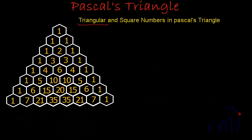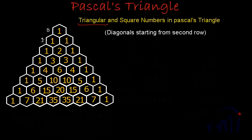Triangular numbers can be directly found in Pascal's Triangle. Triangular numbers and square numbers can actually be found in the diagonals starting from the second row. If we talk about the row numbers, we start from row number zero in Pascal's Triangle, then we have row number one, two, three, four, five, six and seven.